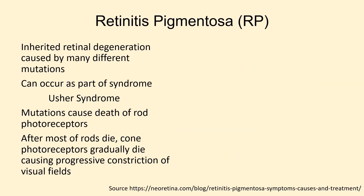Retinitis pigmentosa is a retinal degeneration caused by many different mutations. Some of the mutations have other effects in addition to retinal degeneration, which is the case for Usher Syndrome, in which mutations also cause hearing loss.